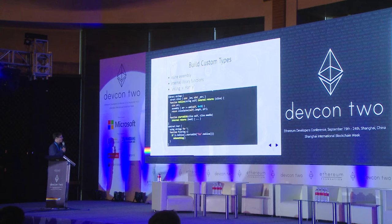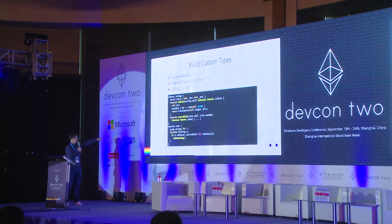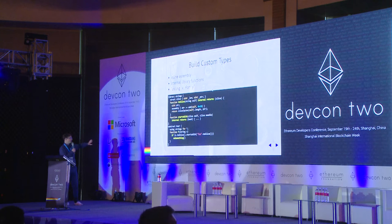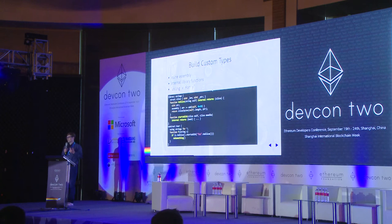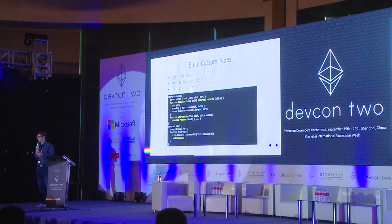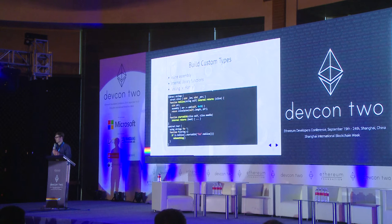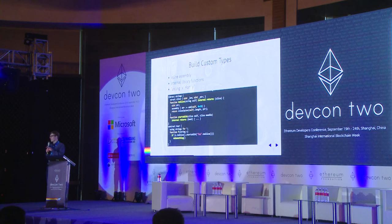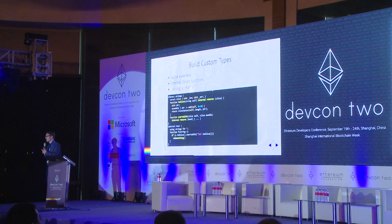The great thing is that using the 'using strings for *' statement you can basically attach functions from a library to an existing type. That's why we can call s.toSlice, although s is a built-in type that does not have the function toSlice. This is a really powerful tool, especially when coupled with inline assembly, because you can create tools using inline assembly without having to change the compiler. You can basically add types that look like built-in types.